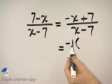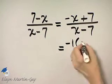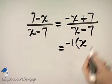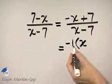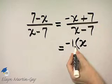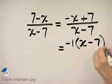Negative x divided by negative 1 is positive x, or simply x. And then positive 7 divided by negative 1 is negative 7, which I'll write as minus 7.